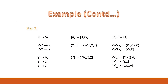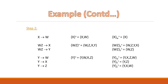The next functional dependency is Y to X. If we exclude this FD, the closure of Y contains only Y and Z. This differs from the original closure of Y, so we cannot remove it. This functional dependency is essential.